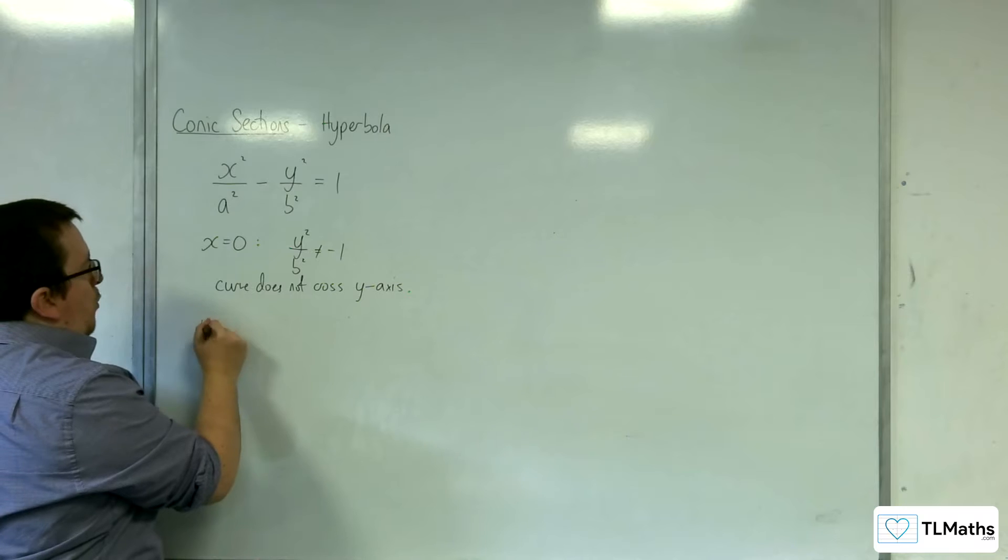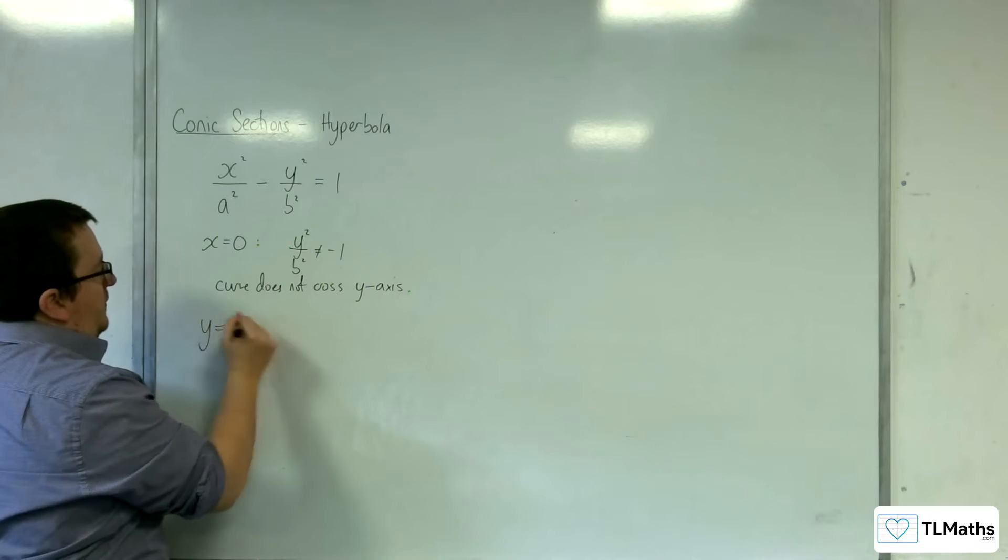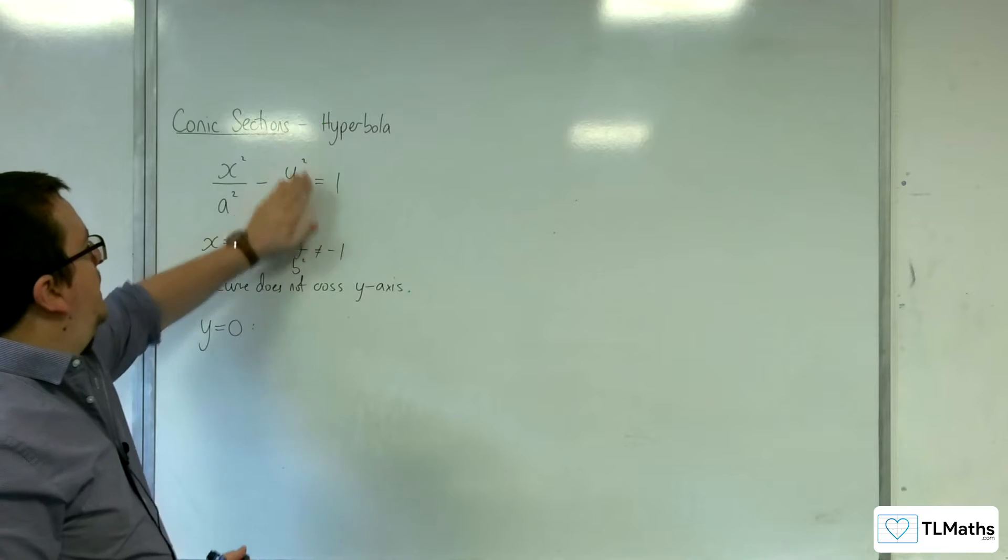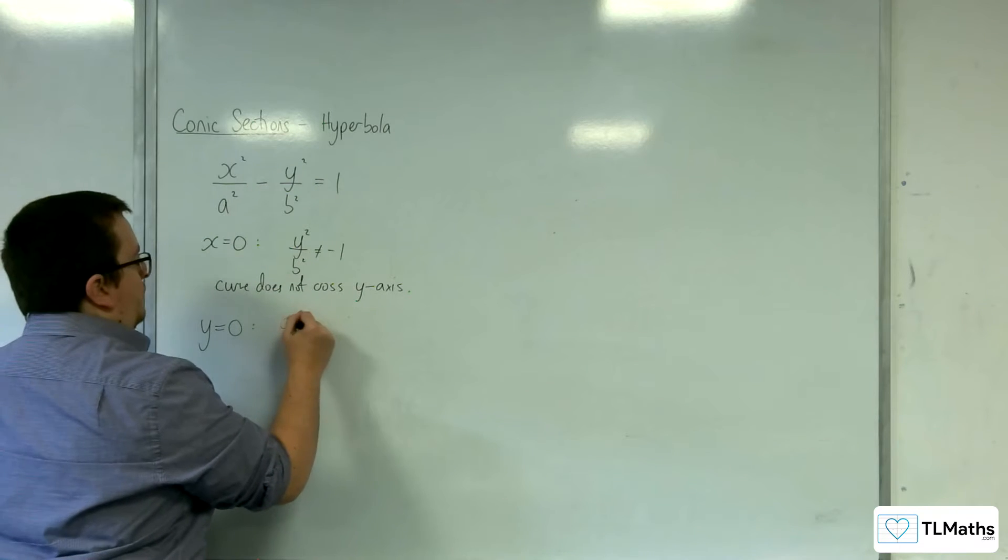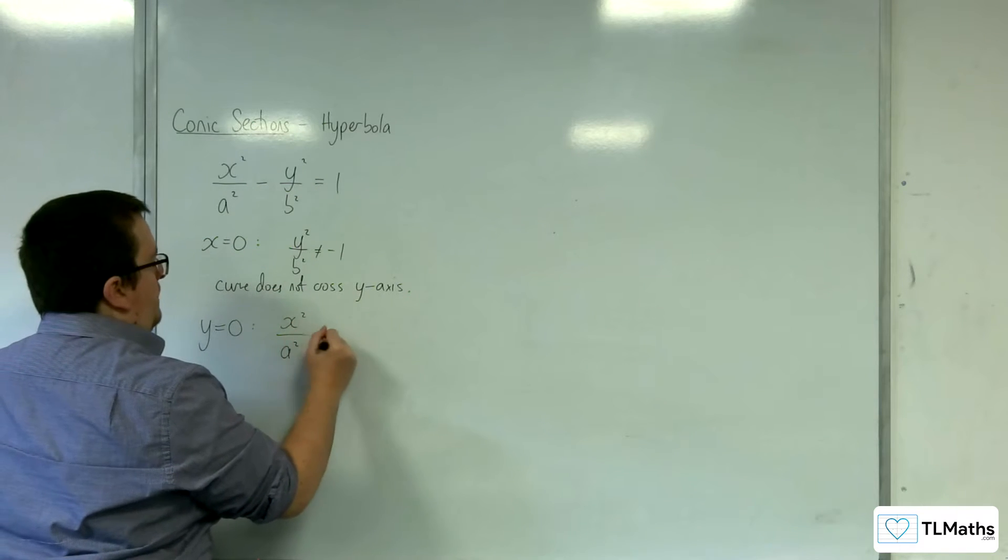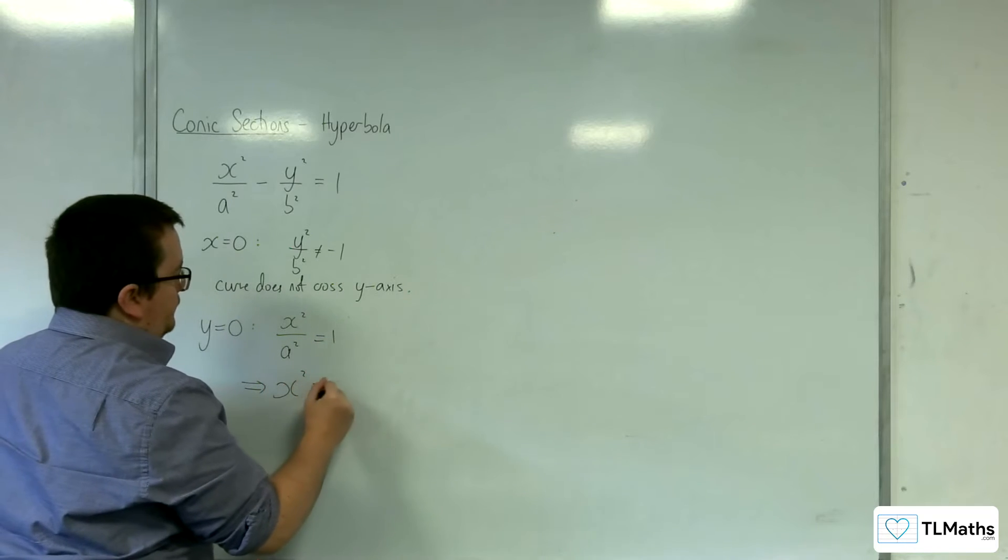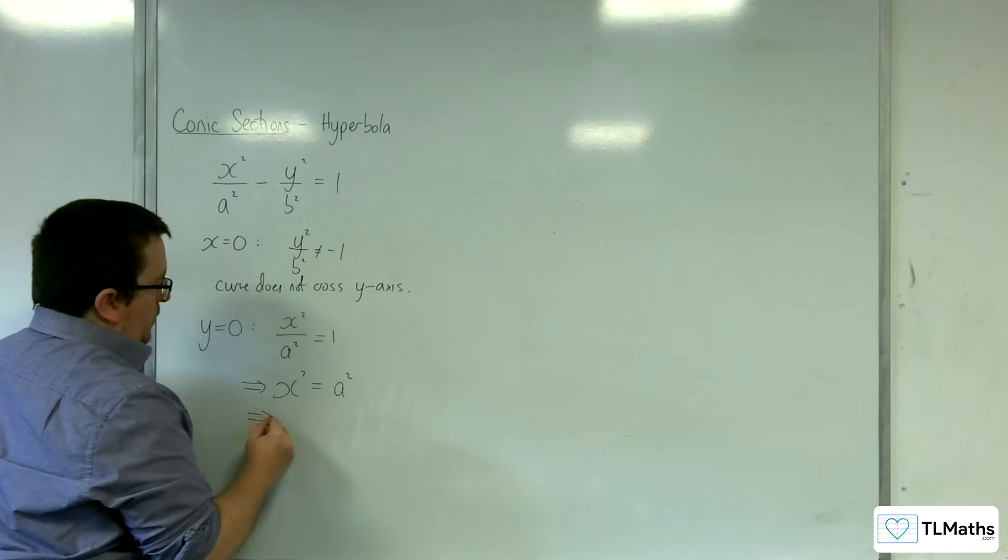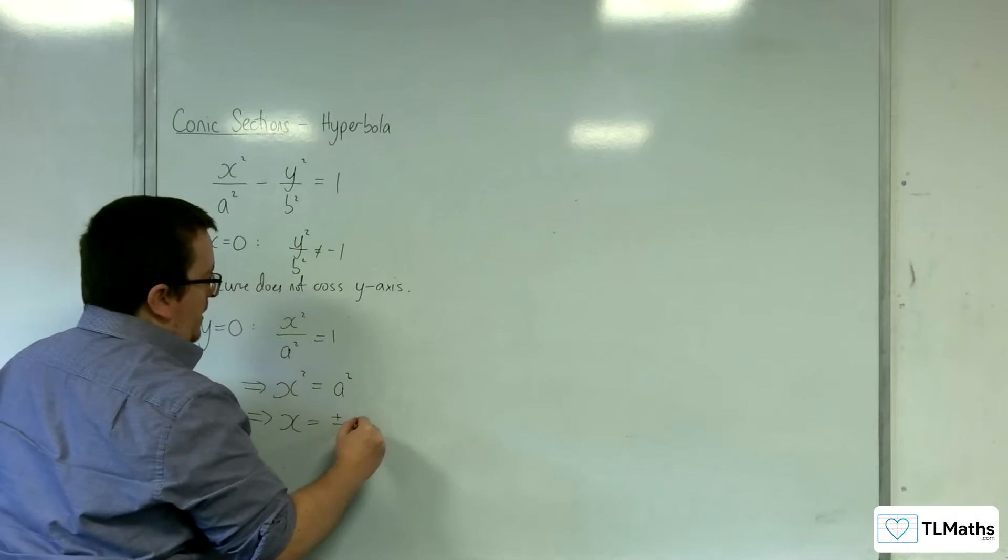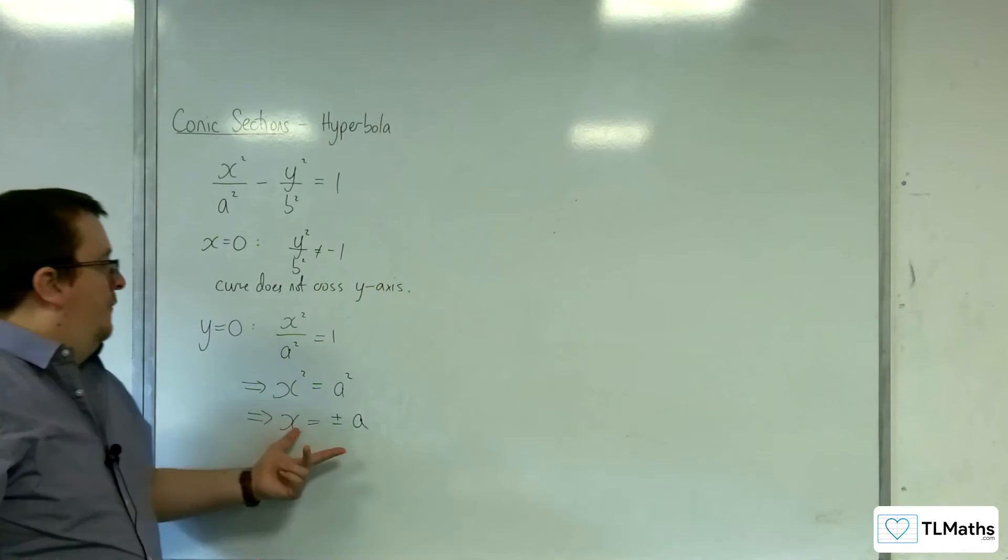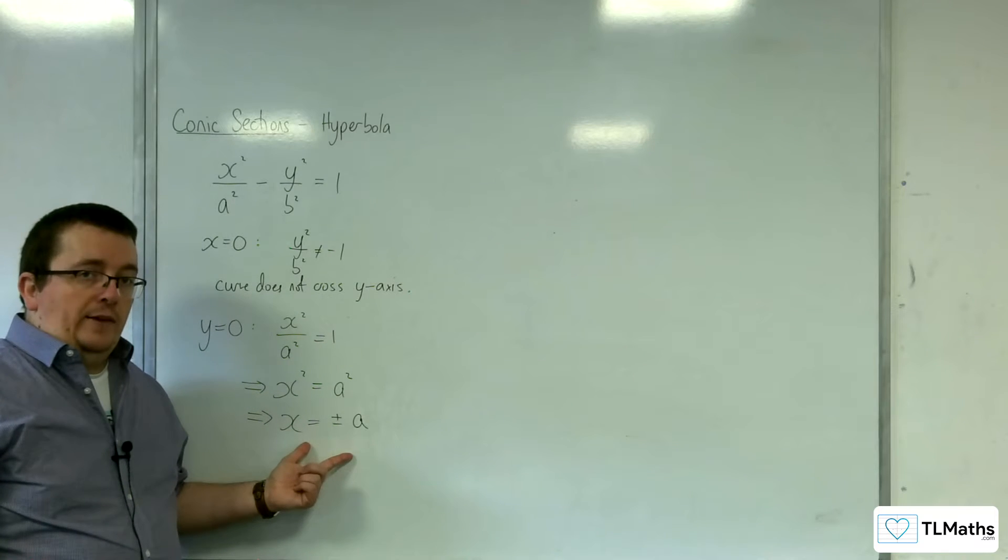How about when y is 0? Can we have any luck there? So when y is 0, we've got x squared over a squared equals 1. That seems OK. So I can multiply it by the a squared. And so square rooting both sides, x must be equal to plus or minus a. And so we've got these two points of intersection with the x-axis.